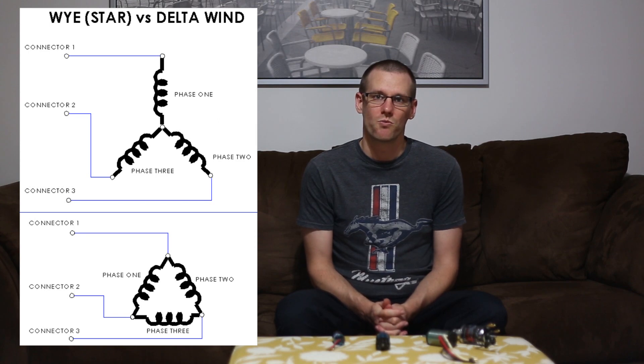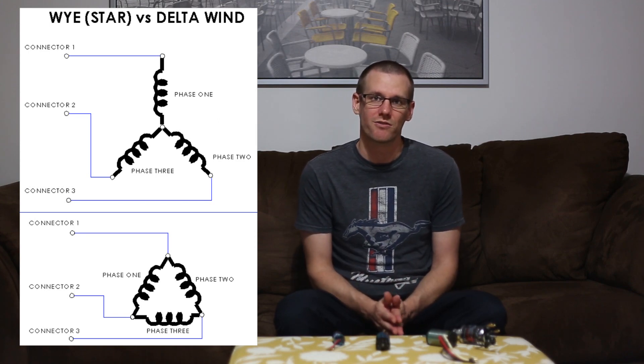Another factor that affects the KV value is how you terminate the windings. There are two primary ways: the motor manufacturer typically sets this up, though some brushless motors allowed the user to terminate the windings by attaching wires at external terminals. One way is known as a Y-wind, and the other is a delta wind. The delta wind is the more 'hot' wind — it gives you a higher KV value, while the Y-wind gives you a lower KV value. You can see in the image beside me exactly what those look like. That covers the majority of how KV changes from one factor to another.